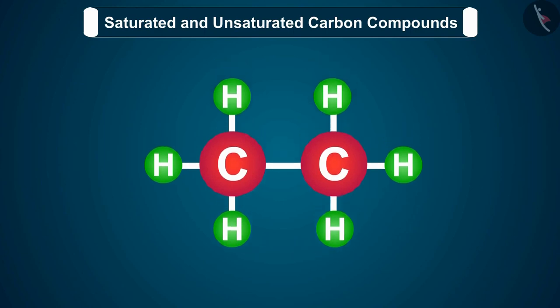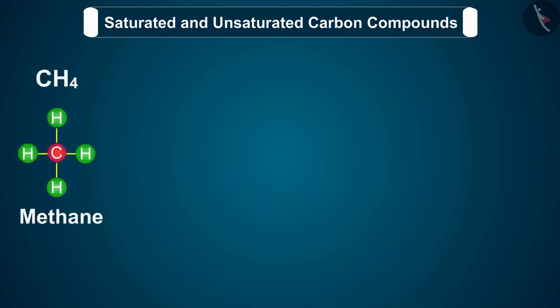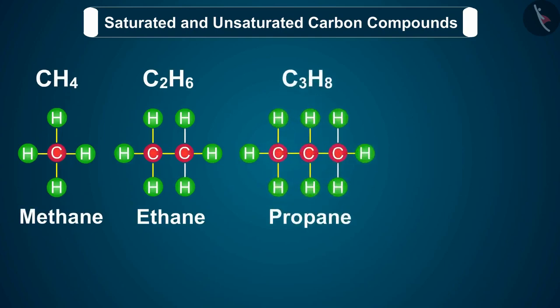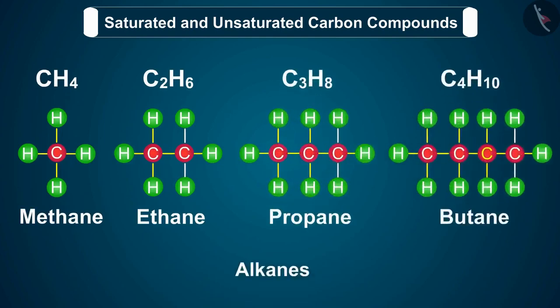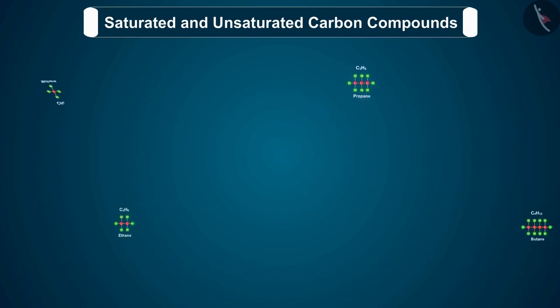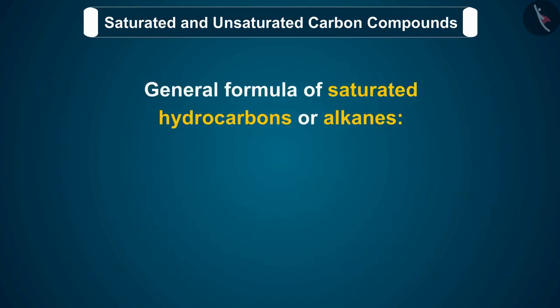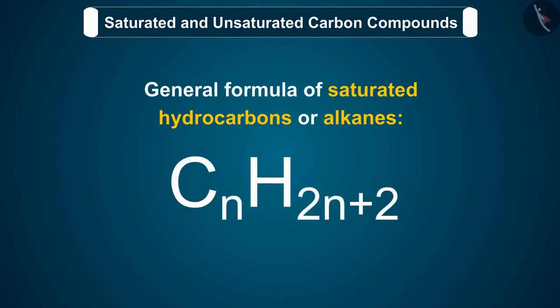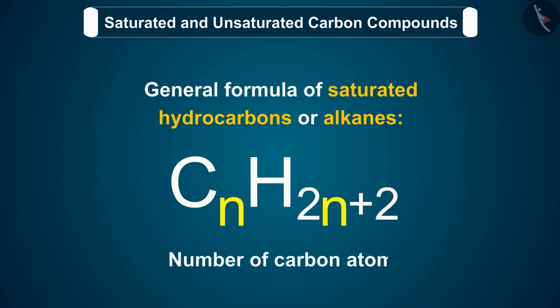Thus, the hydrocarbons methane, ethane, propane and butane are alkanes. The names of all these saturated hydrocarbons end with 'ane'. The general formula of saturated hydrocarbons or alkanes is CnH2n+2, where n is the number of carbon atoms.